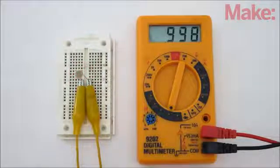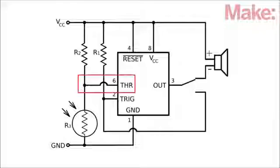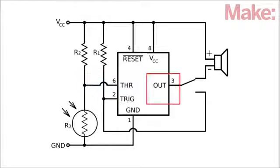When the light beam is interrupted, the resistance of the photoresistor increases and the voltage at pin 6 goes above the reference threshold. This causes the output at pin 3 to go low and activates the alarm.